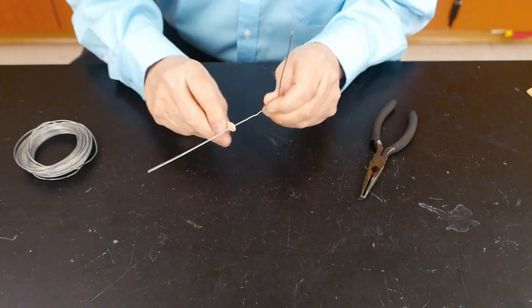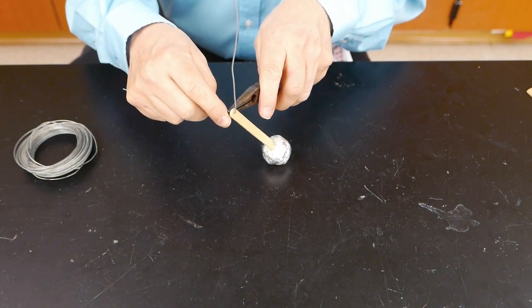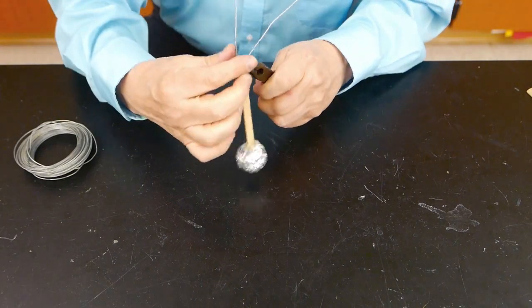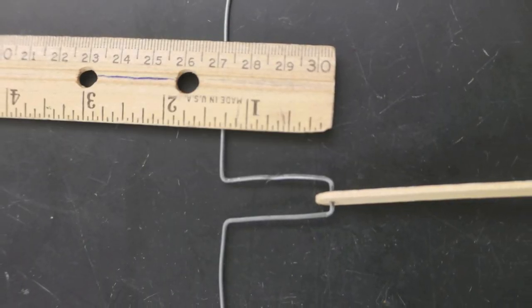Our crankshaft is going to be made out of this wire. I'm going to put a bend in it, slide the piston rod on, and then simply add the second bend. Here's our crankshaft with the piston rod on it, ready to go.